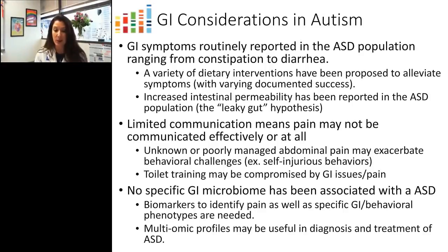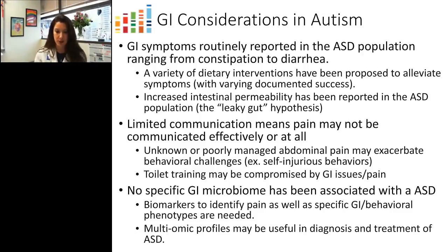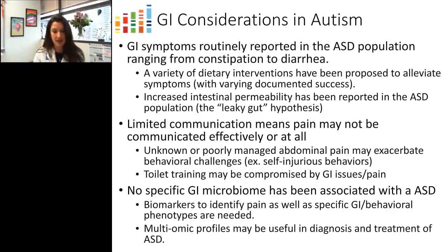While parents have reported GI issues in autism for years, it's only been fairly recently recognized as an actual symptom of ASD. Symptoms can range from constipation to diarrhea to an alternating phenotype, and various dietary interventions have been suggested. A key problem in autism research is that the vast majority of clinical studies use an inclusion criterion that is simply a diagnosis of ASD — yet the ASD population differs greatly from one individual to the next, making it very difficult to gauge whether treatments are effective for specific symptoms.